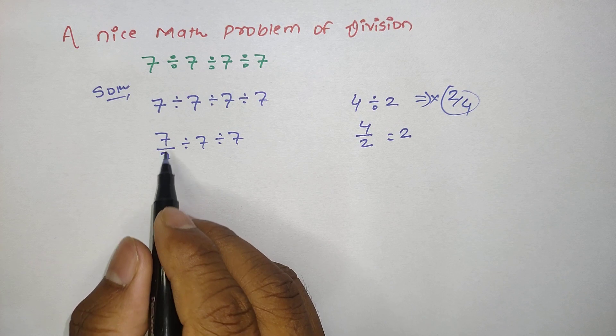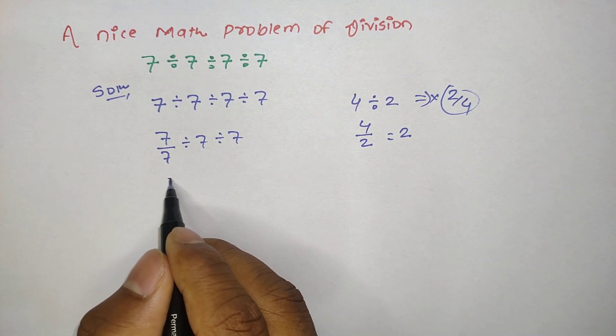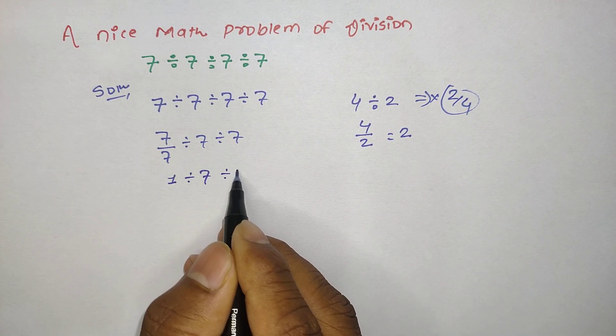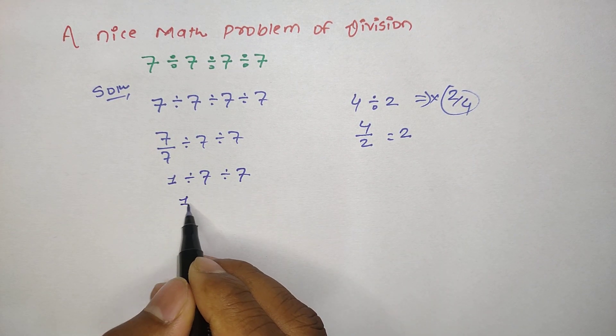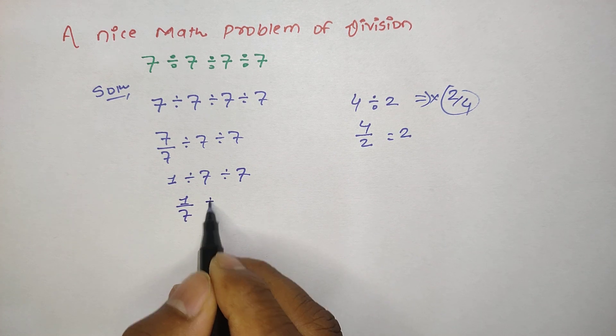Then here we can easily say that 7 divided by 7 is 1, then divide by 7, then divide by 7. Then again we can divide this one like this way: 1 over 7, then this is divided by 7.